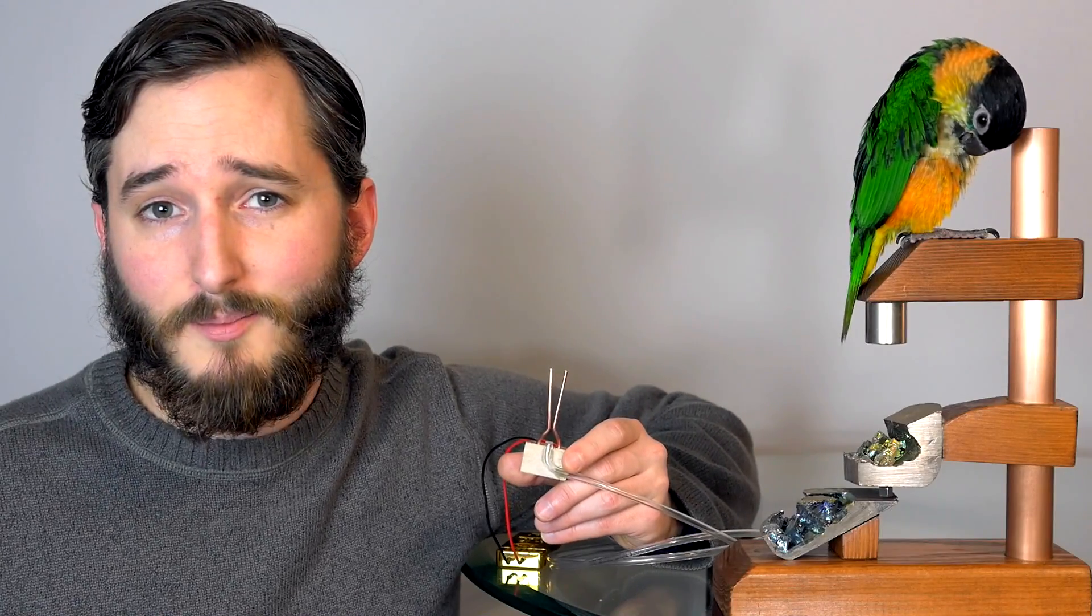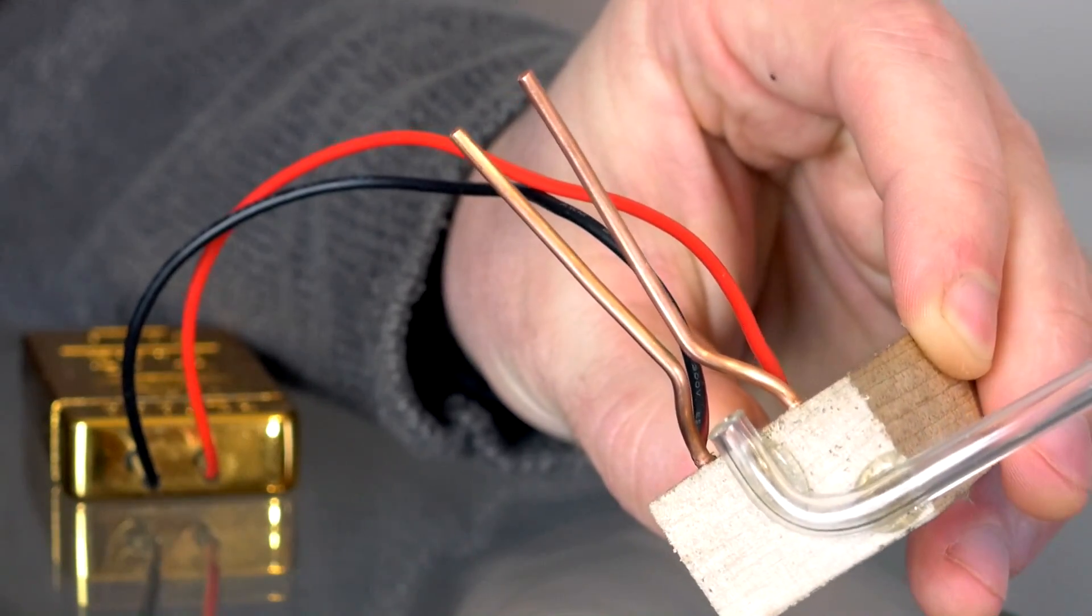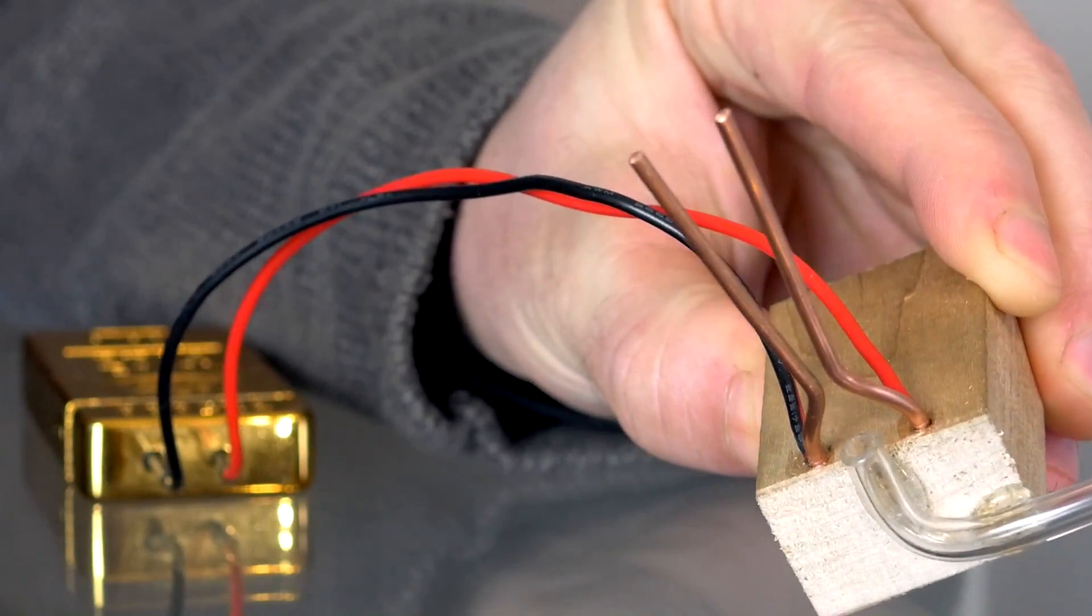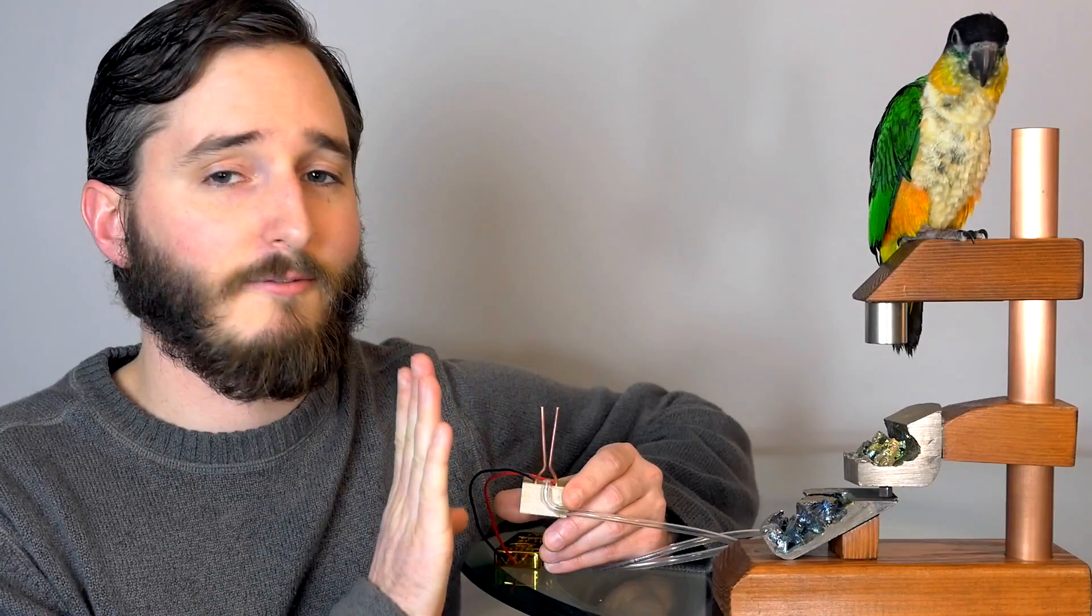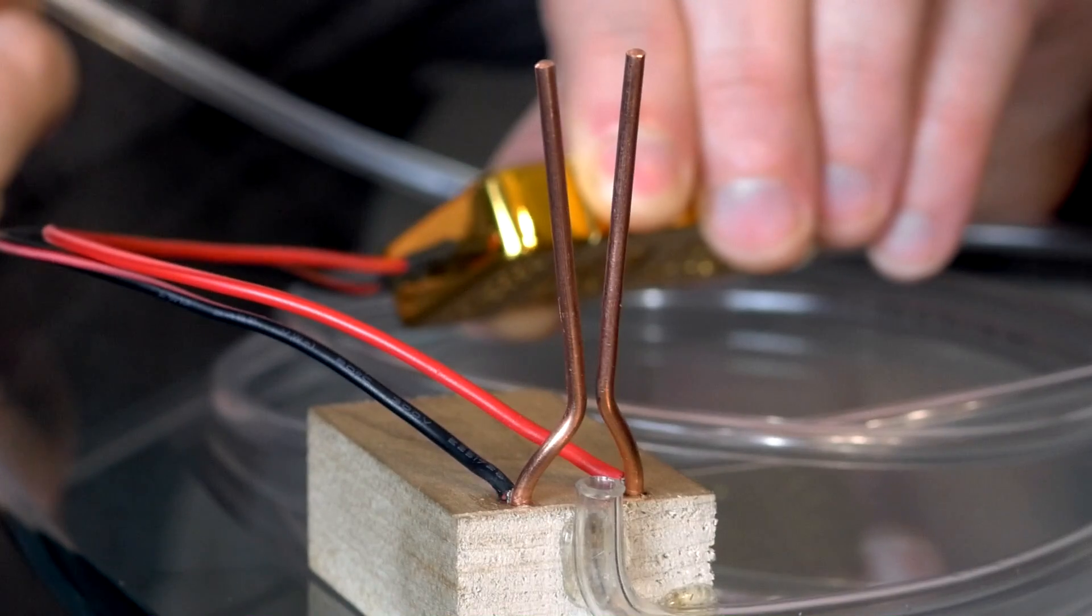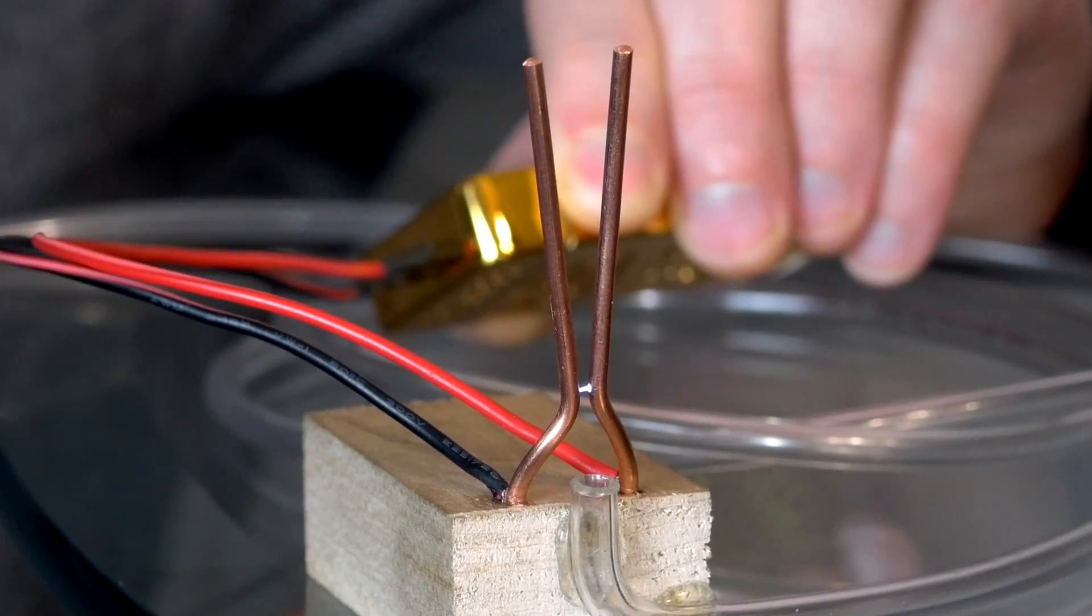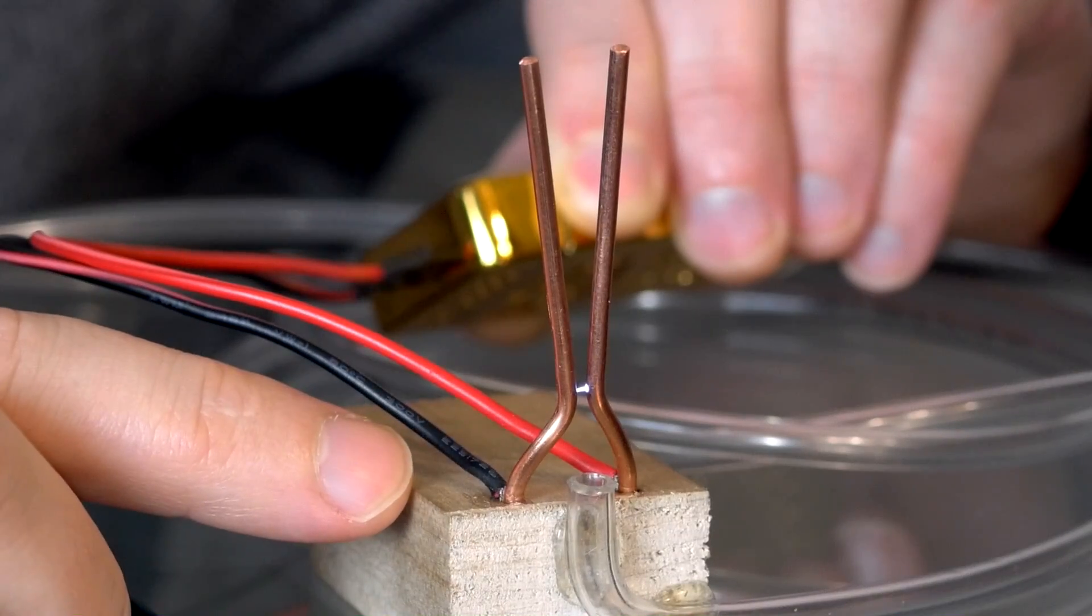If you've never seen a Jacob's ladder before, it's basically two metal wires that stick up on an angle. So the closest space in between them is toward the bottom of the wires, and as they go up they get further and further apart. Now when you charge these two wires with high voltage electricity, an arc wants to jump between them, but that arc will start where the wires are closest together, which is toward the bottom.